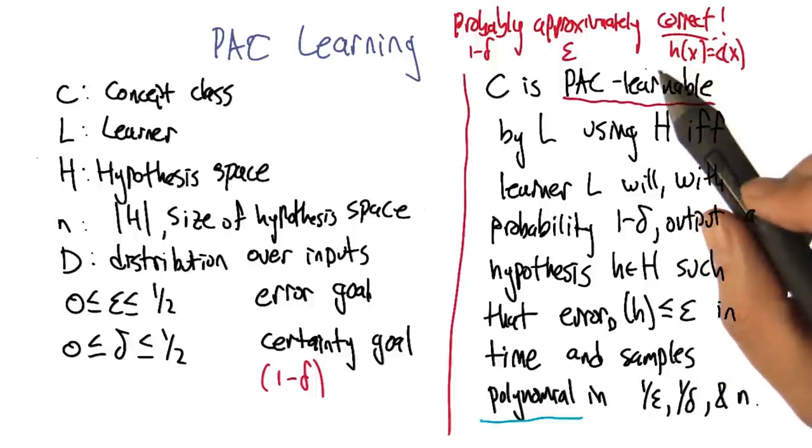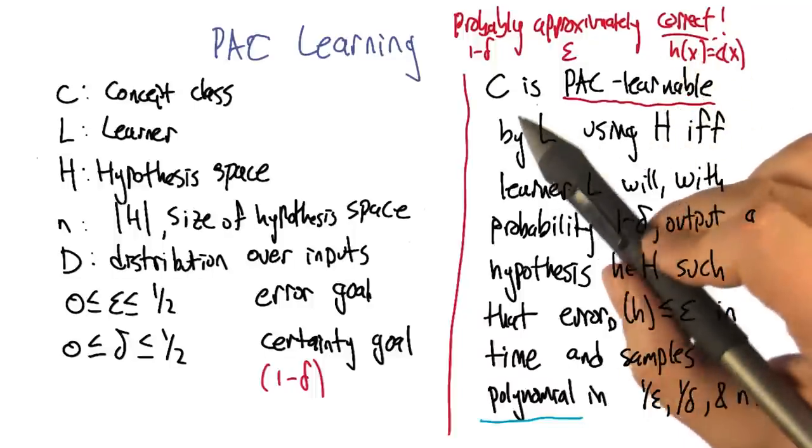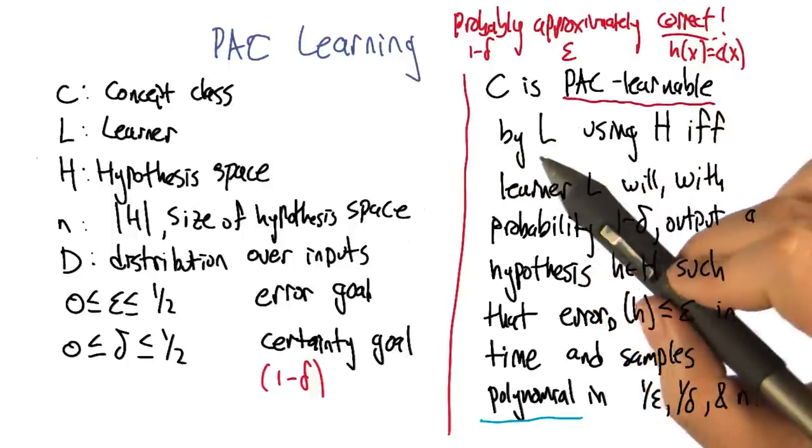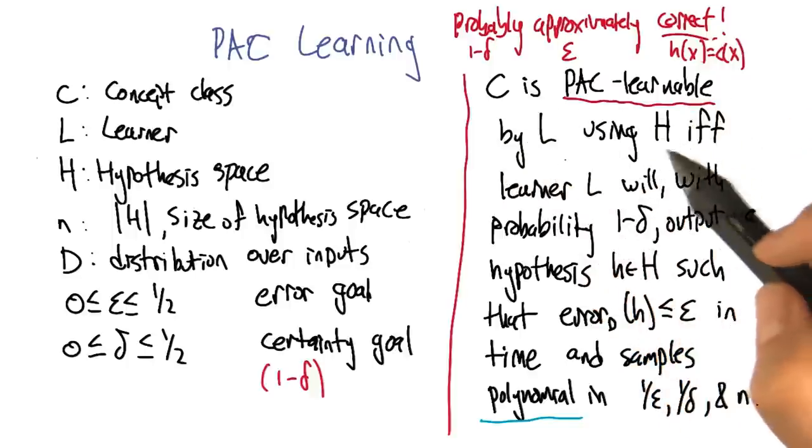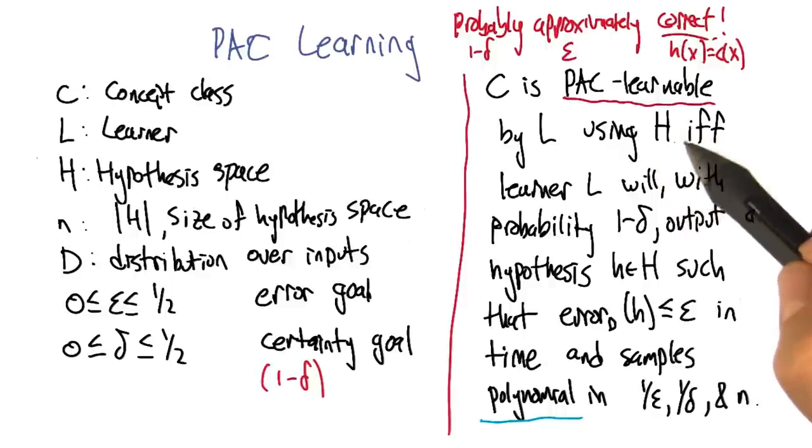All right, now we can actually dive in and give a definition for PAC-learnable. So a concept class C is PAC-learnable by some learning algorithm L using its own representation of hypotheses H.